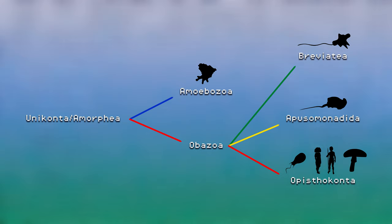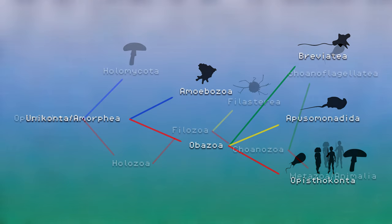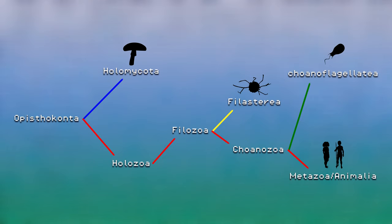Then 1 billion years ago, Opisthoconta split into Holomikota, the clade containing fungi, and Holozoa, the clade containing animals and their single-celled cousins. Phylozoa split from Holozoa 782 to 900 million years ago, then split into Phylisteria and Coanozoa, and then Coanozoa split into Choanoflagellata and Metazoa, or Animalia — meaning every life form going forward will be an animal.